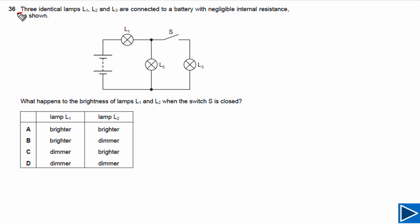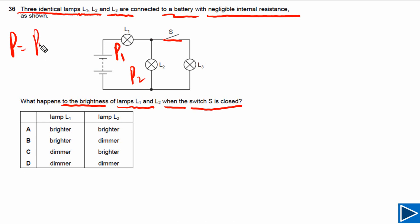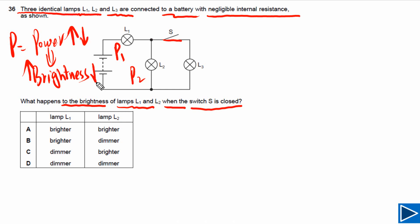First of all, let's try to understand what is given to us. It is given that there are three identical lamps L1, L2, and L3. They are connected to a battery and the battery has no internal resistance. What we need to find out is simply to compare the brightness of lamps L1 and L2 when the switch S is closed. We can simply compare the power, since power is linked with brightness — higher the power, brighter the bulb.